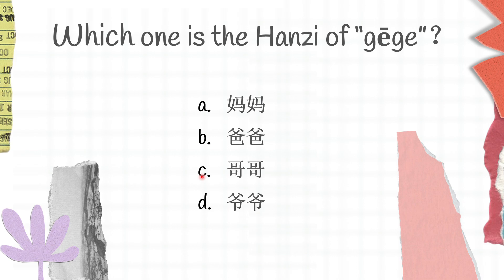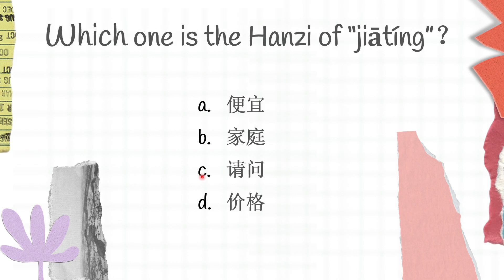By the way, the content of today's exam is vocabularies from lesson 10 to lesson 16, and you might want to review it first. Let's move on to the next question: which one is the character for 家庭 (jia ting)?